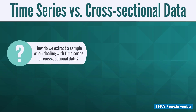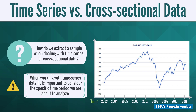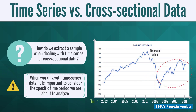But how do we extract a sample when dealing with time series or cross-sectional data? When we sample time series data, it is important to consider the specific time period we are about to analyze. For example, a sample of financial returns for the period 2003 to 2011 would be biased, because it would incorporate two periods: the first prior to the financial crisis of 2008, and the second after the crisis. The sample would be biased by such an important event, so we need to be careful when selecting the period for time series data.